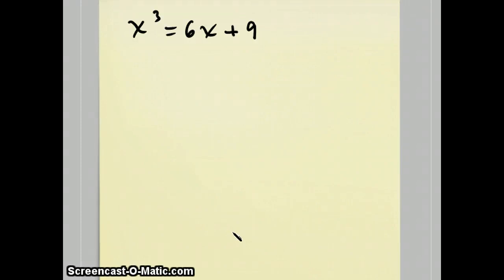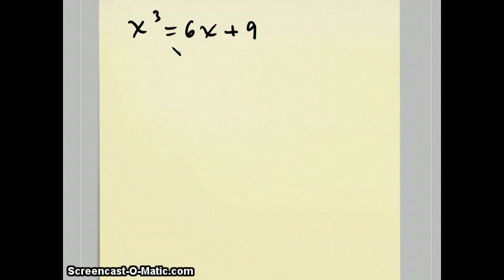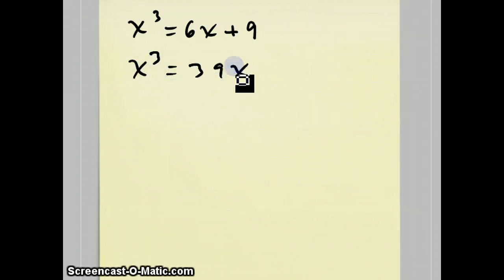Hi, this is Gary Rubenstein. This is part four in a series of tutorials on how to solve cubic and quartic equations. In the first three tutorials we've gotten up to what's called the depressed cubic equation — those are equations like you see over here where there's no x squared term. This one has an answer of x equals three, and another equation we did that was much more complicated was x cubed equals 39x plus 380, which had an irrational answer slightly bigger than nine.